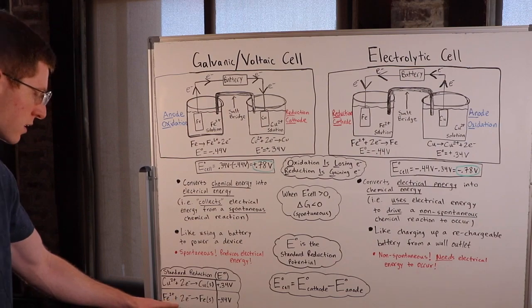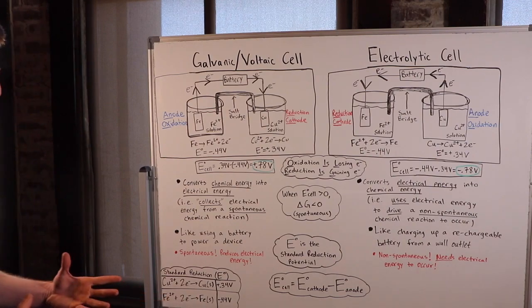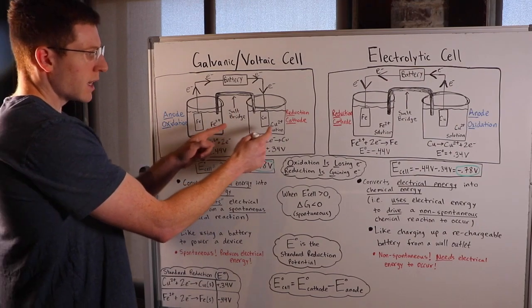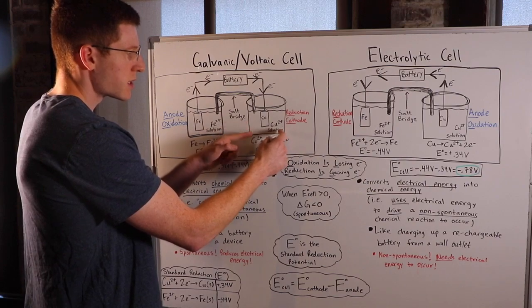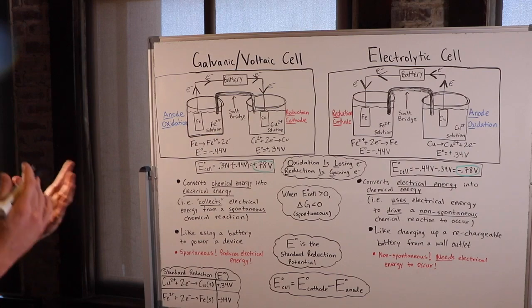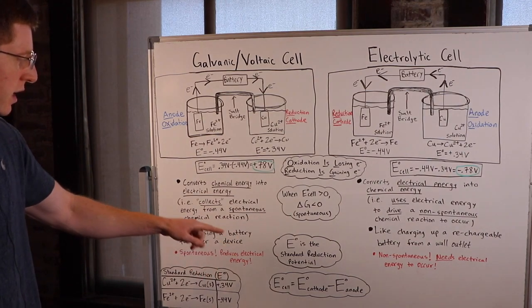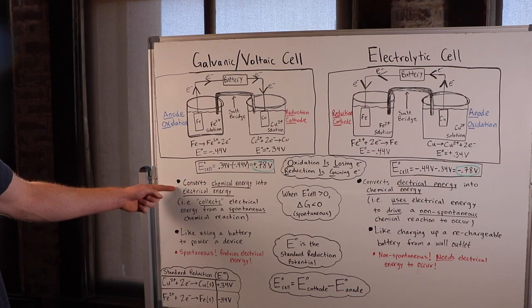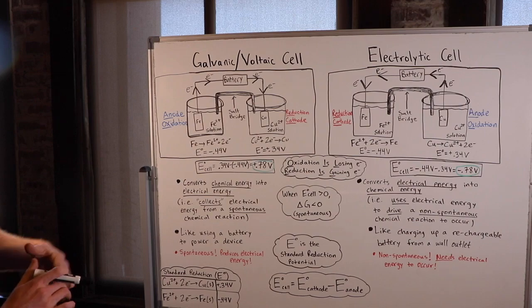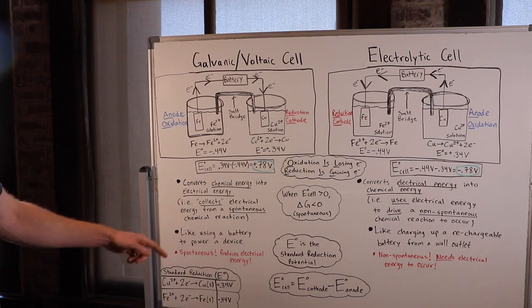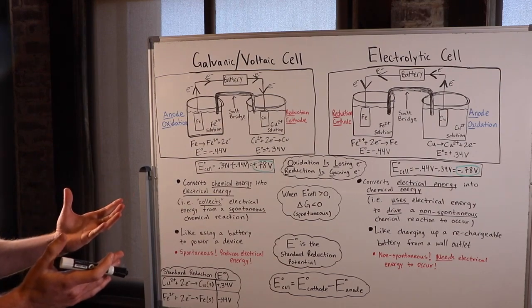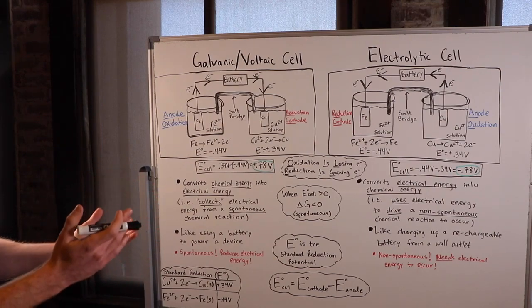Iron actually wants to do the opposite — it wants to get oxidized and give off electrons. So when the iron gets to give off electrons like it wants and the copper gets to accept electrons like it wants, everyone's happy. The reaction is spontaneous, it happens without any intervention, and it actually produces energy. This converts chemical energy into electrical energy — it collects electrical energy from a spontaneous chemical reaction, which is like using a battery to power a device, like a phone in your pocket.